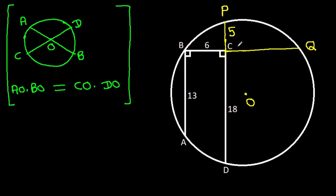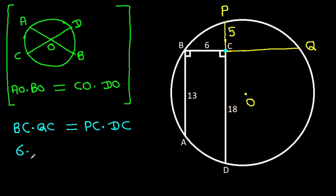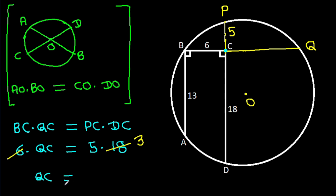Here BQ and PD are intersecting at C. So BC times QC equals PC times DC, and it is 6 times QC equals 5 times 18. And 6 times 3 is 18, so QC is 5 times 3, that will be 15.